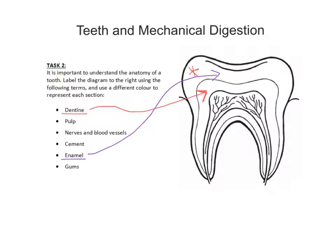This inner region here — I'll colour this in blue — is known as the pulp. It's a particularly sensitive region of the tooth, and the reason it's sensitive is because the nerves and blood vessels are found within that pulp.